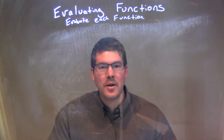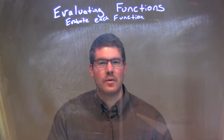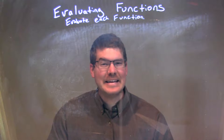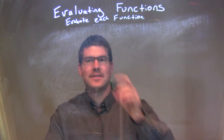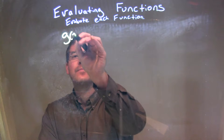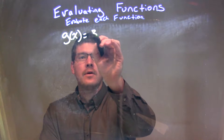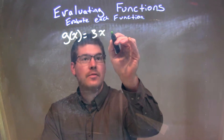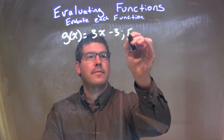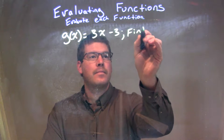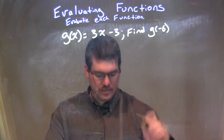Hi, I'm Sean Gannett and it's MinuteMath. Today we're going to learn about evaluating functions. We're going to evaluate a function. So, if I was given this function, g of x is equal to 3x minus 3, and we need to find g of negative 6.